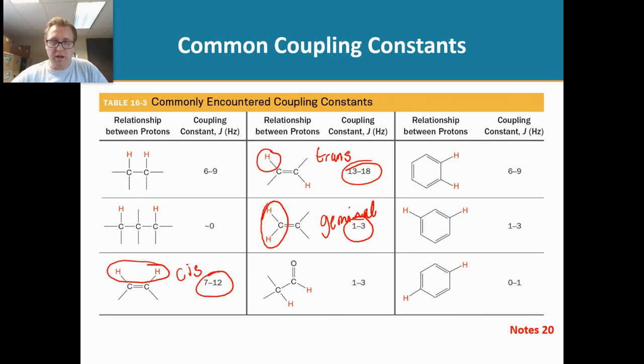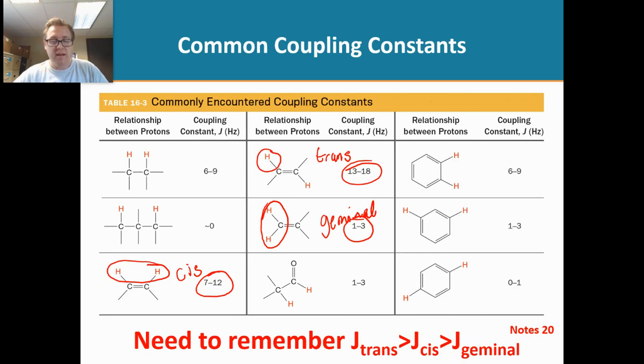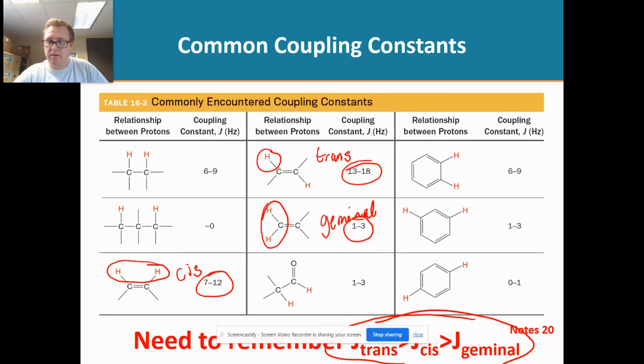So it's really good for you guys to memorize this, that the trans has a larger J-coupling constant than cis and geminal. It goes in that order. That would be very, very good for you guys to just have that memorized. Okay, so that's the end for this video. As always, if you have any questions or concerns, please let me know. Thank you.